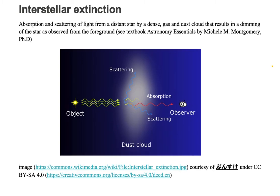So let's take a look at this interstellar extinction. Here is a distant star emitting yellow light. You're in your own star system, the solar system, and we'll draw the light as yellow as well.